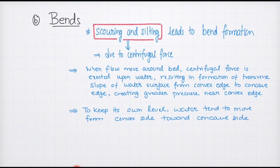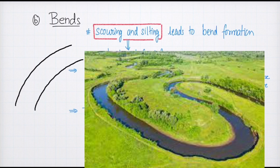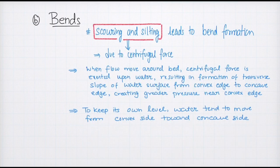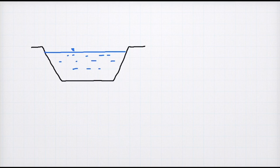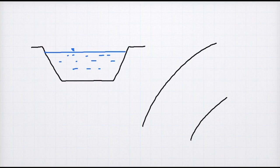Next we have bends. A bend is the change in curvature of the river as we move along its length. The reason for bends is the scouring and silting process, and the reason for that process is the centrifugal force exerted by the moving water at the bed slope. We have a river channel in which the water is flowing, and as the water moves along a certain curve, we have a convex side and a concave side.